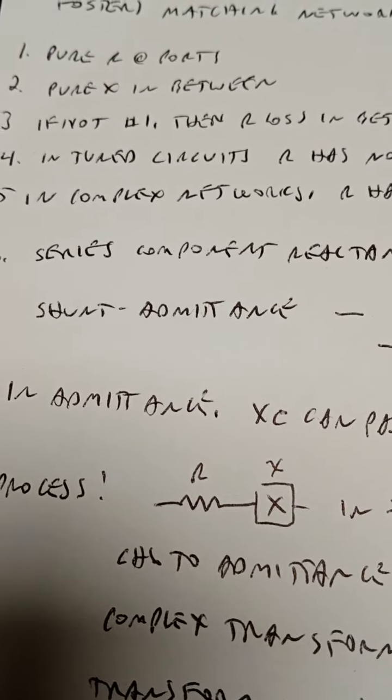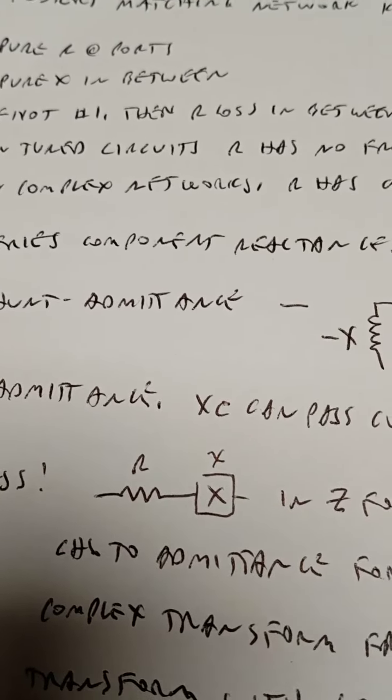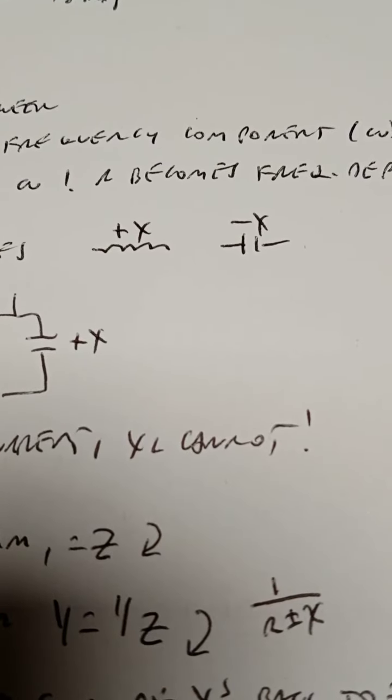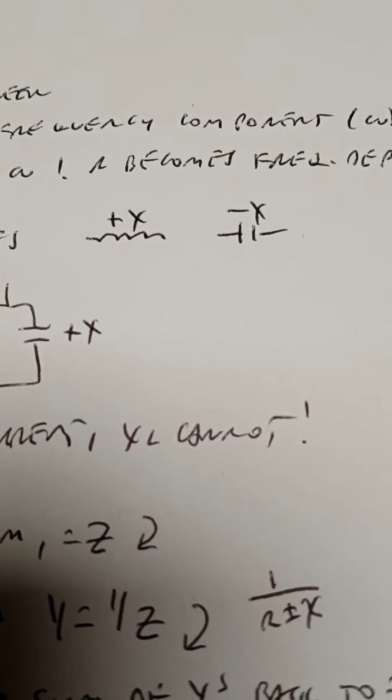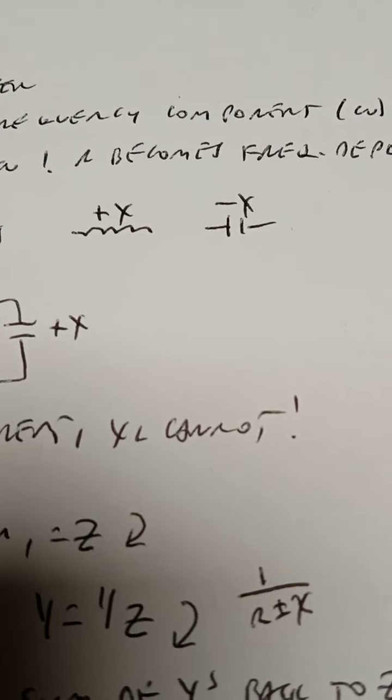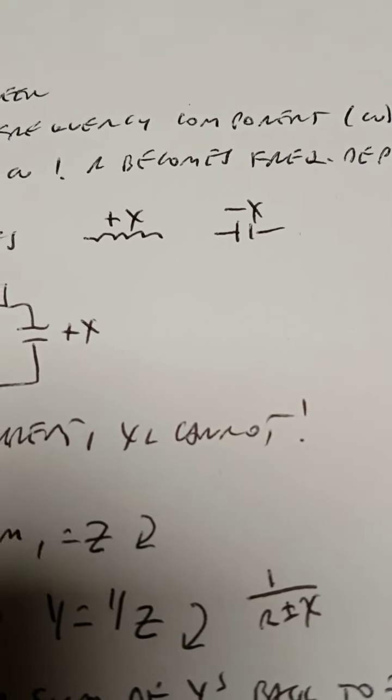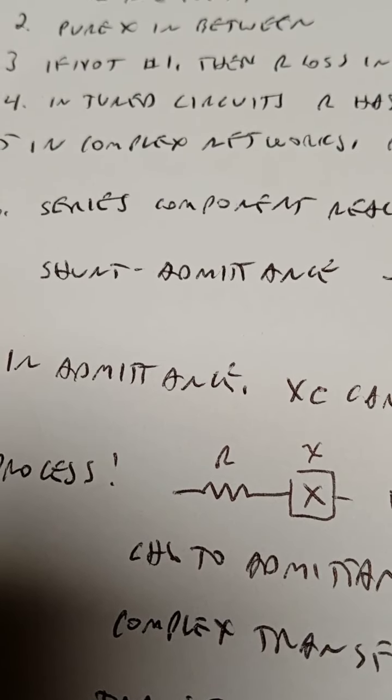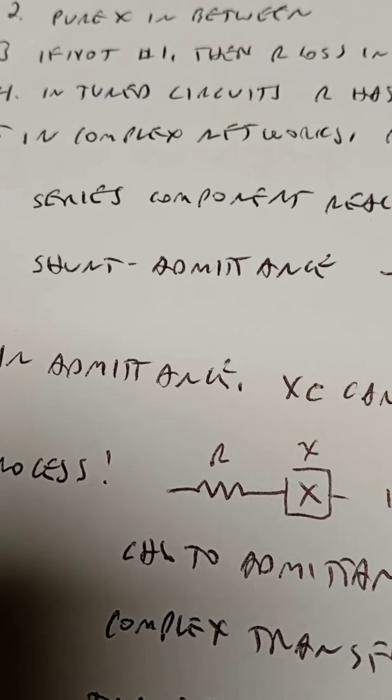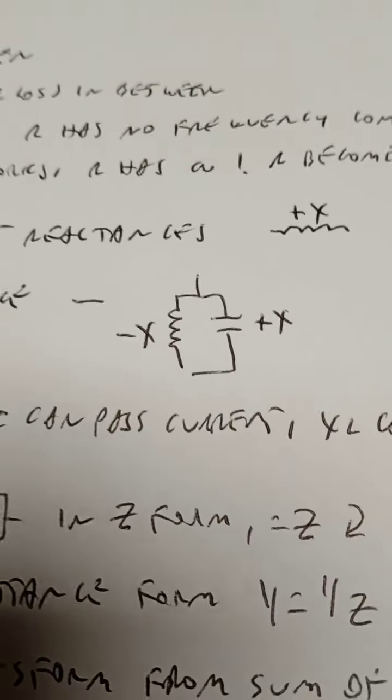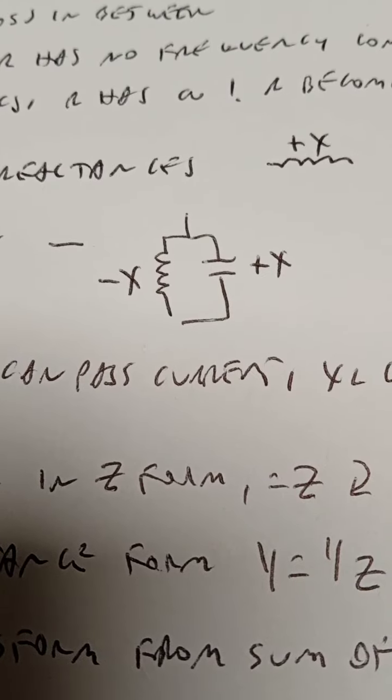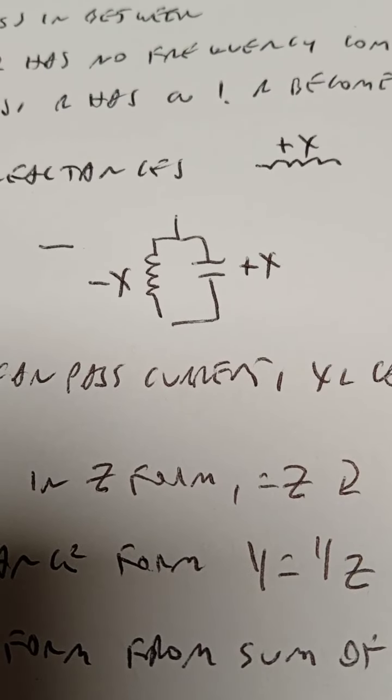In tuned circuits, series component reactance, inductive is plus X, capacitive is minus X. That's phase, what that really is. That's in the impedance form. In the shunt or admittance form, the signs reverse. In shunt or parallel, the inductive reactance is minus and the capacitive is plus.